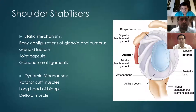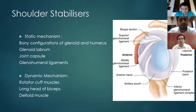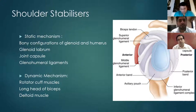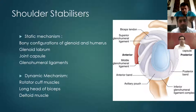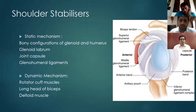The shoulder is stabilized through a static mechanism and a dynamic mechanism. The static mechanism includes bony configurations of the glenoid and the humerus, the glenoid labrum, the joint capsule, and the glenohumeral ligaments. The dynamic mechanism involves the rotator cuff muscles, the long head of the biceps, and the deltoid muscle.